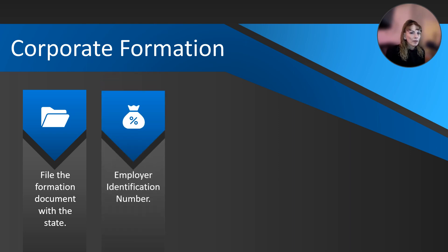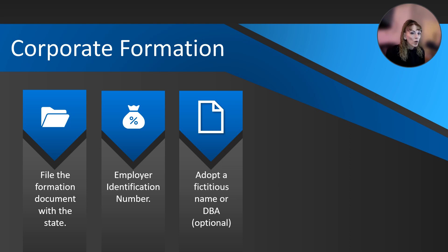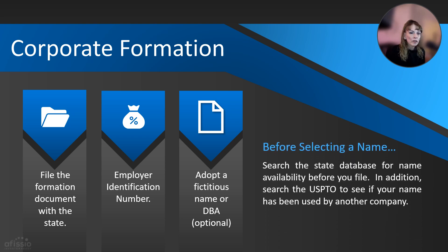Once you have formed your entity and the document has been approved by the state, you can obtain your employer identification number from the IRS. Be sure to get this number for any entity because you want to separate liability from your personal liability. You also start to build credit for your company with a separate EIN. One option once the entity is formed is to file for a DBA — doing business as, or a trade name — a name separate from the corporation's name under which you can do business. You can have more than one DBA. Be sure to search your name before doing any business with the company, to make sure the name is available for use before any business transactions. Unwinding this is difficult.